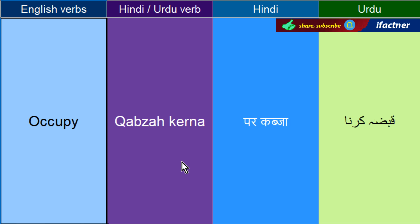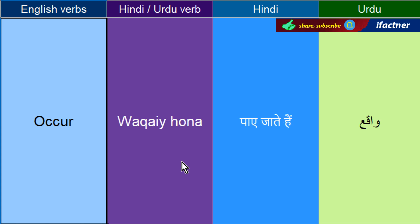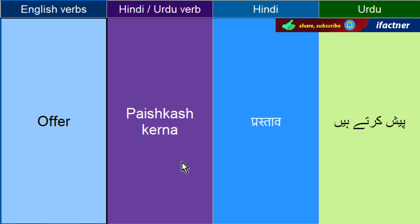Kabza kerne ko keha jata hai — Occupy. Waakay hoona — Occur. Paish kash karnay ko kehthay hai — Offer. They are offering a good package — koyi mobile company hai, woh ek achcha package offer ker rehi hai, paish kar rahi hai.